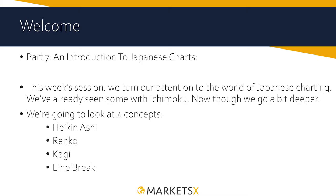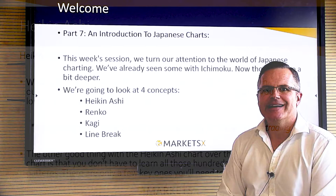So as it is down there, four concepts this week: Heiken Ashi, Renko, Kagi, and Linebreak.